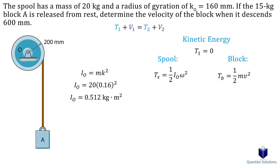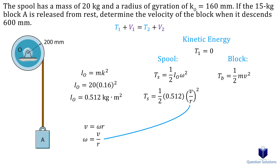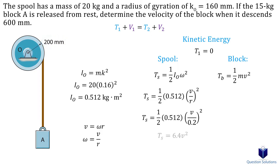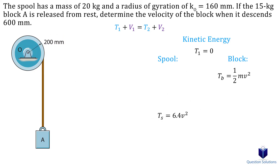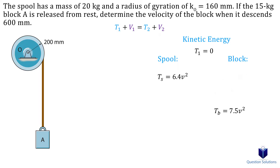Since the question asks for the velocity of the block, we write the angular velocity in terms of linear velocity: the velocity of the block equals the angular velocity of the spool times the radius. We can isolate for angular velocity and plug this into the kinetic energy equation. The radius of the spool is 0.2 meters. For the block's kinetic energy, the mass is 15 kilograms.